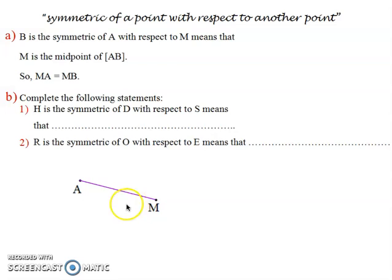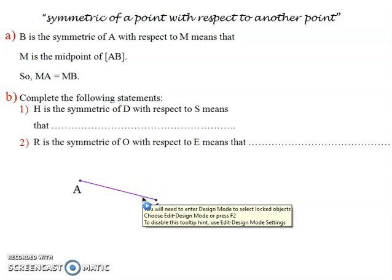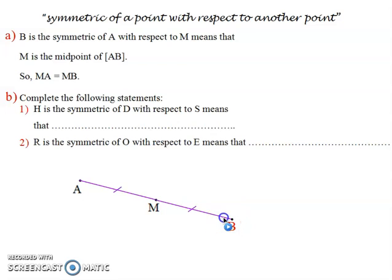This is segment AM. M is the midpoint of AB, which means B must be on the other side in a way that distance AM equals distance MB. These two distances are equal because as we said, M is the midpoint.